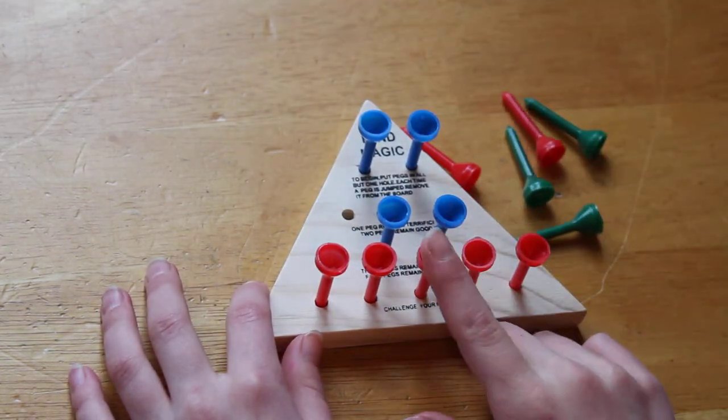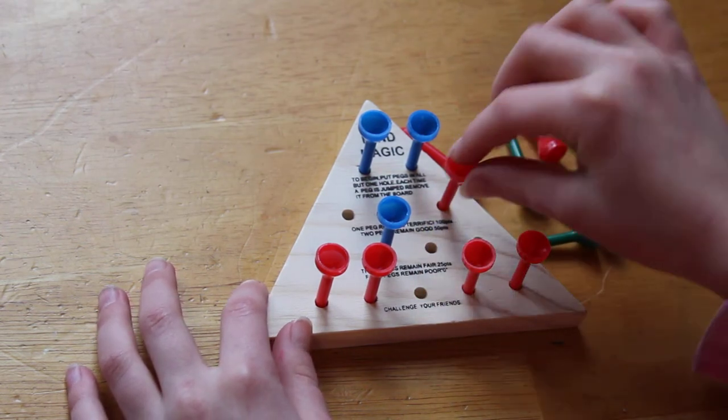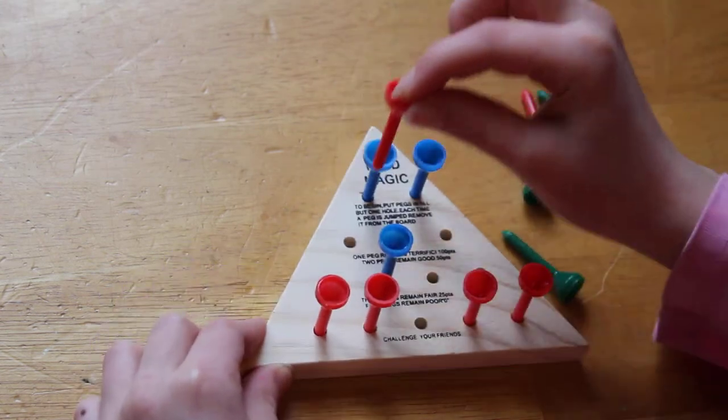Then you take this little red piece down here and go over this blue piece. Then you take this red piece and go over this blue piece and this blue piece.